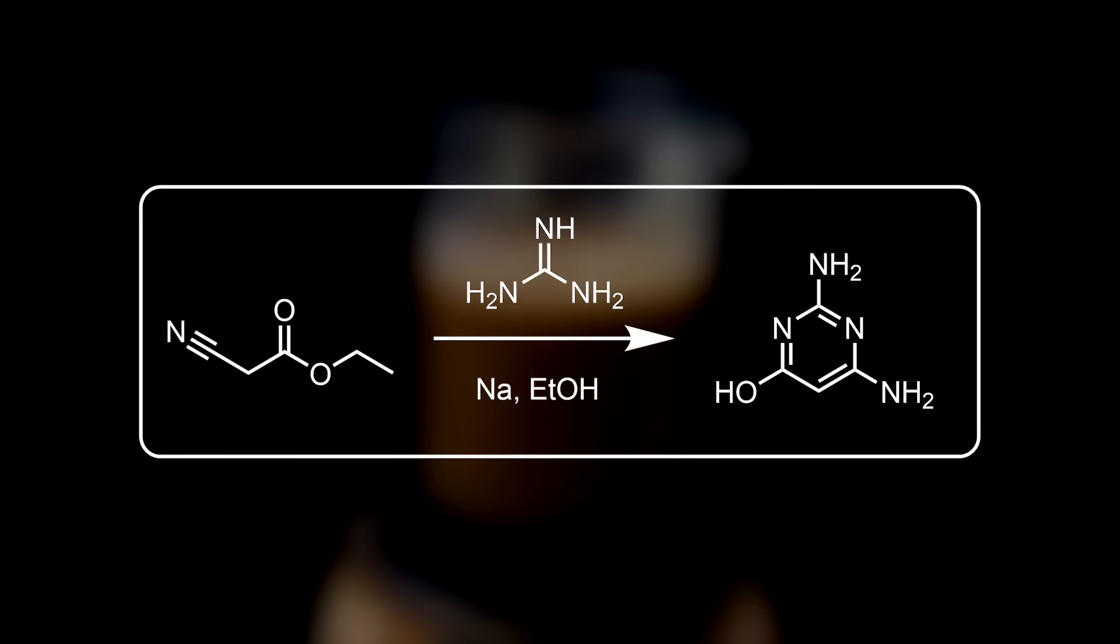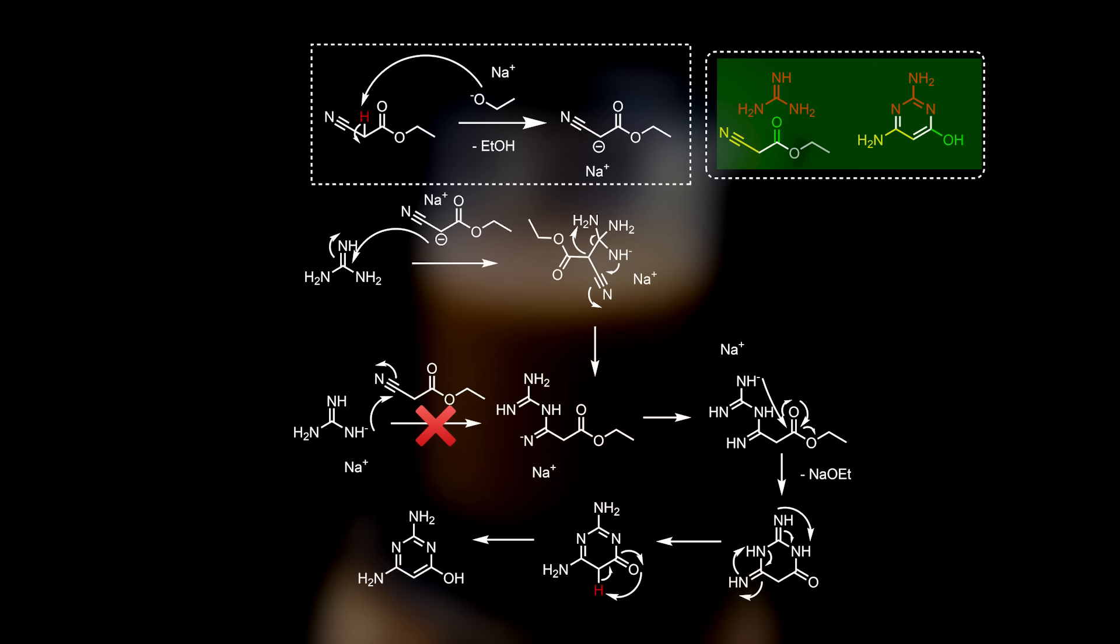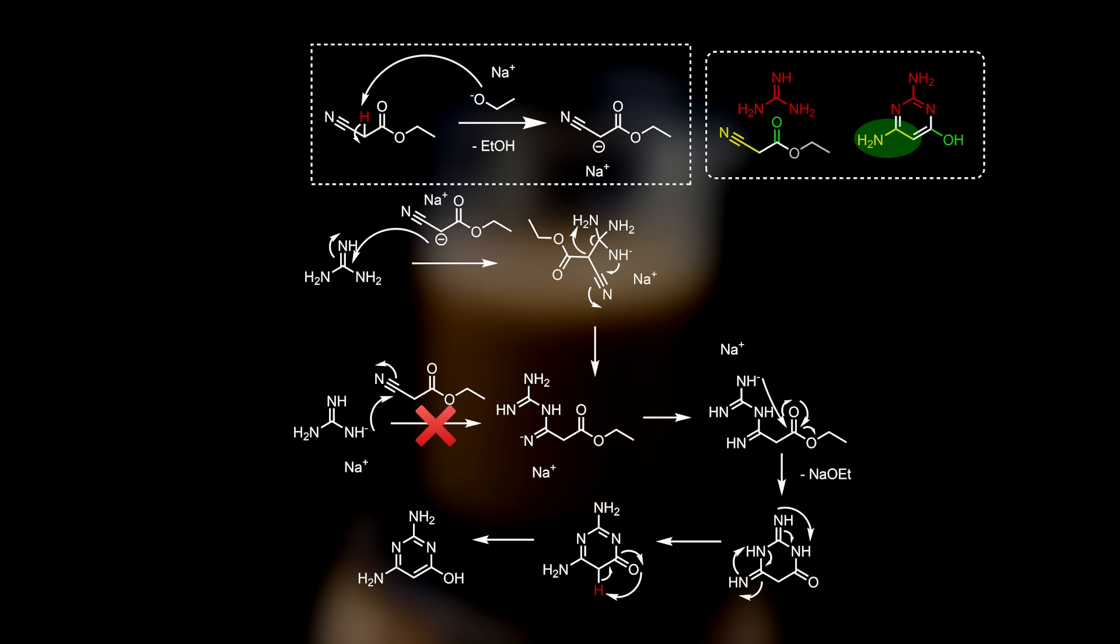In this reaction ethyl cyanoacetate and guanidine react in the presence of a strong base giving this 2,4-diamino-6-hydroxypyrimidine. How exactly it proceeds wasn't fully detailed online. However based on the reagents and the end product I can theorize a path that it takes. Since we see the formation of the sodium salt of ethyl cyanoacetate which creates a nucleophile it is likely to assume it will act as one. Meanwhile guanidine is quite difficult to deprotonate in comparison.